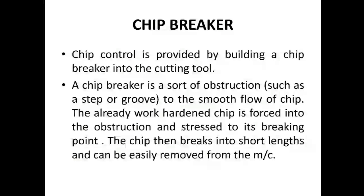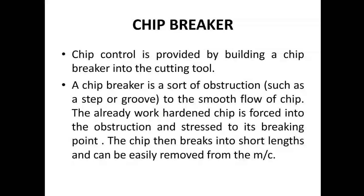Chip breaker: chip control is provided by building a chip breaker into the cutting tool. A chip breaker is a sort of obstruction to the smooth flow of chip. The already work-hardened chip is forced into the obstruction and stressed to its breaking point; the chip then breaks into short lengths and can be easily removed from the machine. These are all the details of types of chips. If you like this video, put a thumbs up and subscribe to this channel, and like and share with your friends.